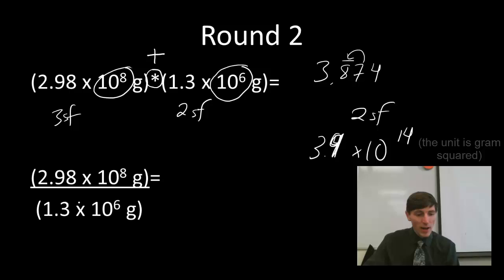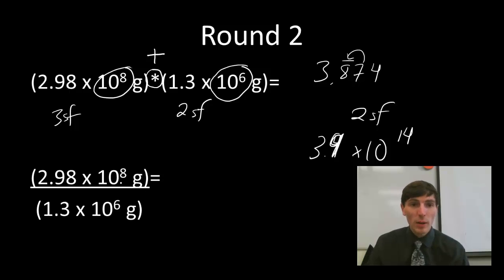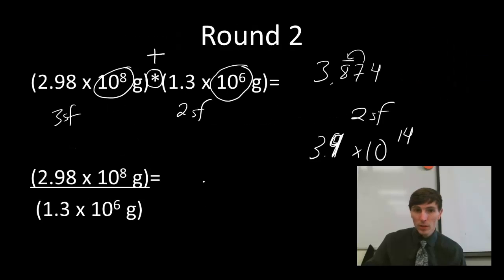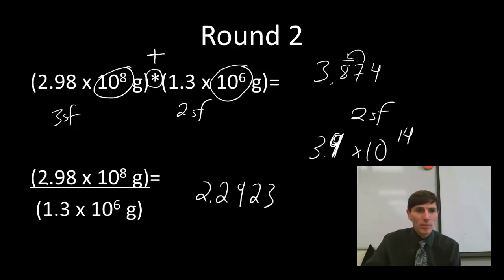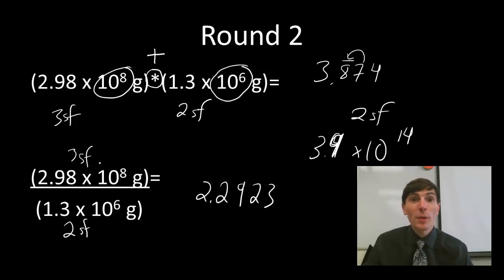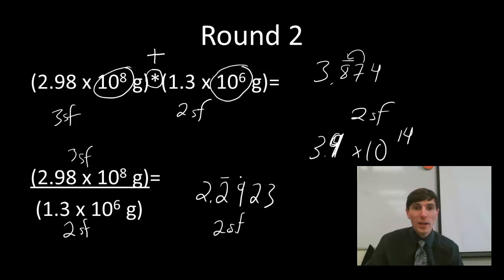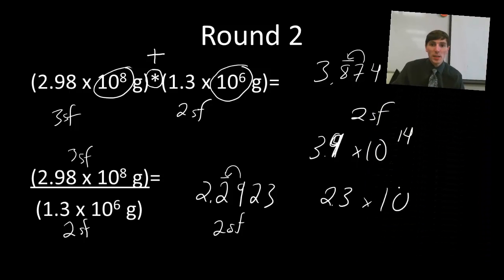For division with the same base, instead of adding exponents we subtract them. So 2.98 divided by 1.3 gives 2.29-something. It's a division problem with 2 and 3 sig figs, so I need 2 sig figs — rounding to 2.3. For the exponent, 8 minus 6 gives 2, so the final answer is 2.3 times 10 to the 2nd.